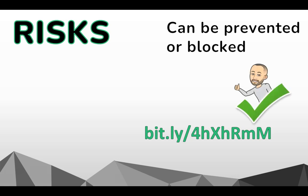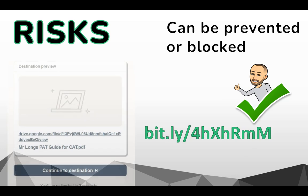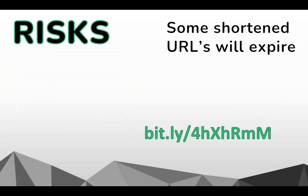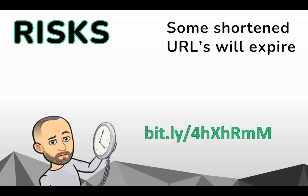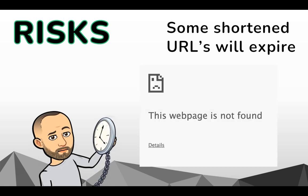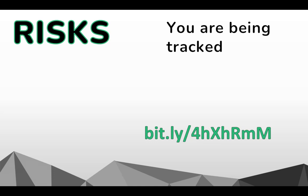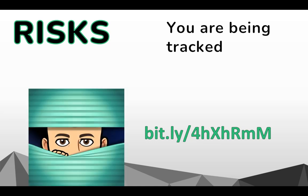Users can't see where the link leads before clicking on it, so make sure you are receiving the shortened URL from a trusted source or website you know, or see if you can preview the original link — some services let you check where it leads. Also be aware that some free URL shortener services let the URL expire over time, meaning your short link may stop working after a certain period, so test it regularly. And be aware that URL shorteners are tracking information when you click on the link, like where you clicked it from — normally it's okay, but be aware if you are trying to remain anonymous.